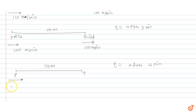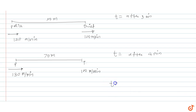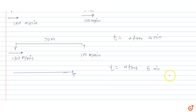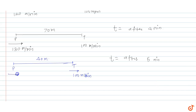Ab police की speed 130 meter per minute हो जाएगी। Thief की speed constant 100 meter per minute है। After 5 minutes consider करते हैं — police 30 meter extra आगे आ जाएगा। Thief इस minute में भी 100 meter आगे जाएगा तो distance 170 होगी, but police 130 meter आगे आ जाएगा। तो 170 minus 130 = 40 meter की distance बचेगी police और thief के बीच में।